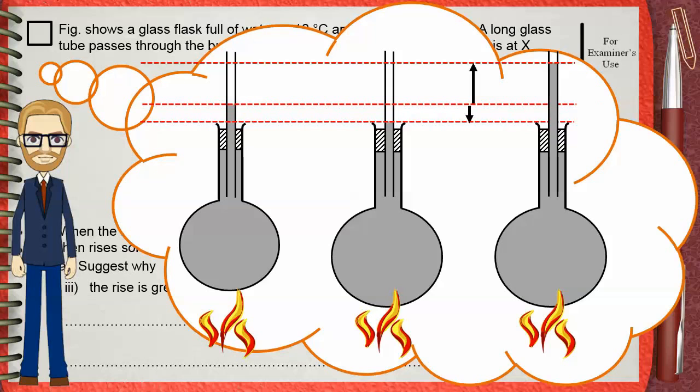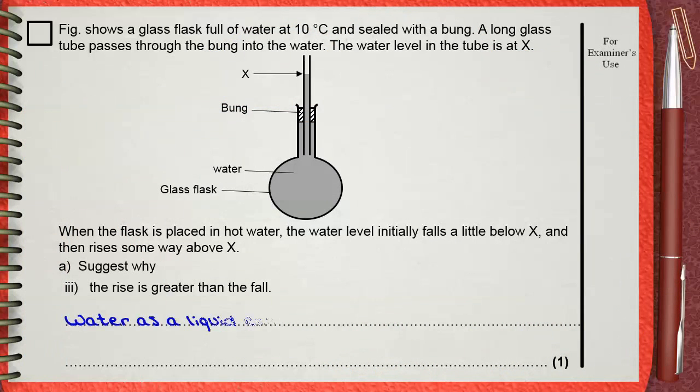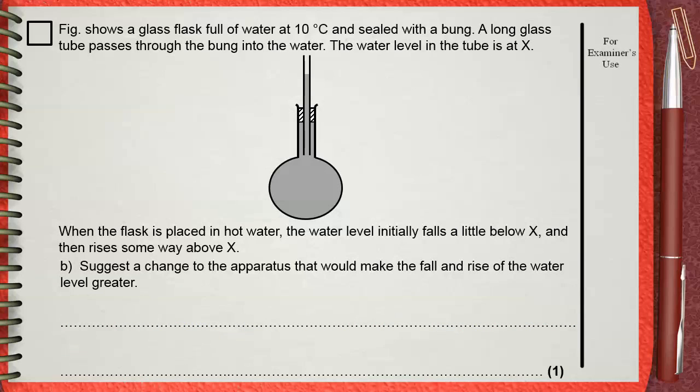We say that water as a liquid expands more than the flask which is a solid. Question B. Suggest a change to the apparatus that would make the fall and rise of the water level to be greater.